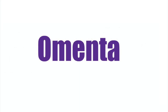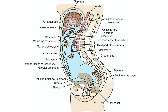Omenta are two-layered folds of peritoneum that connect the stomach to another viscus. The greater omentum connects the greater curvature of the stomach to the transverse colon and hangs down like an apron in front of the coils of the intestine. The lesser omentum suspends the lesser curvature of the stomach and the proximal duodenum from the fissure of the ligamentum venosum and the porta hepatis on the undersurface of the liver.